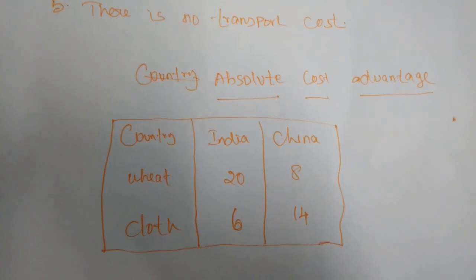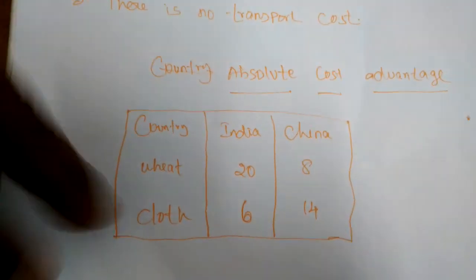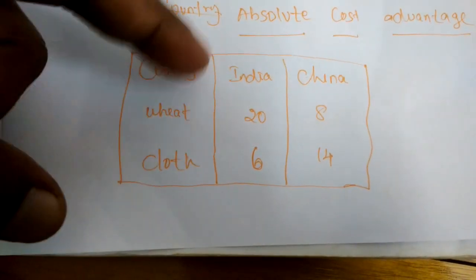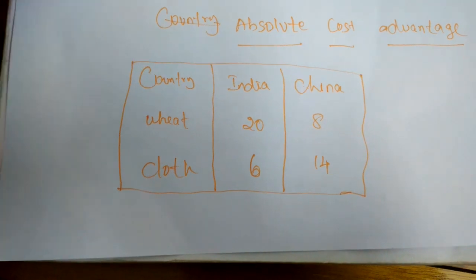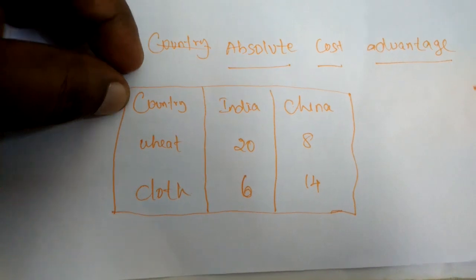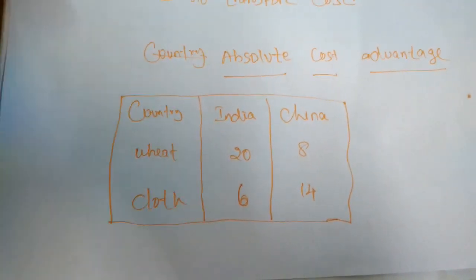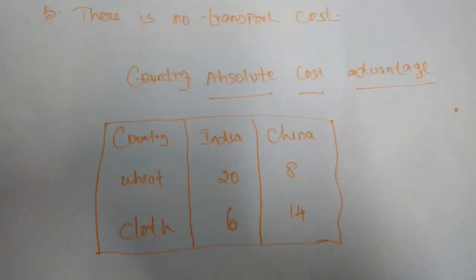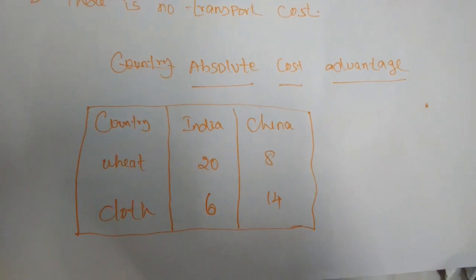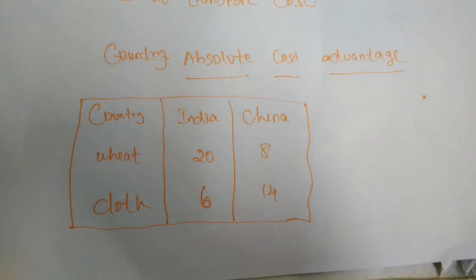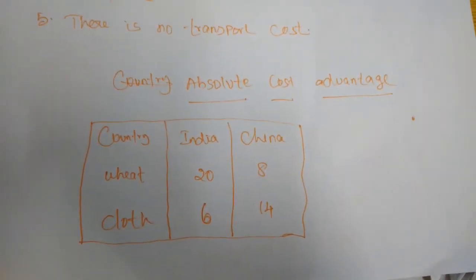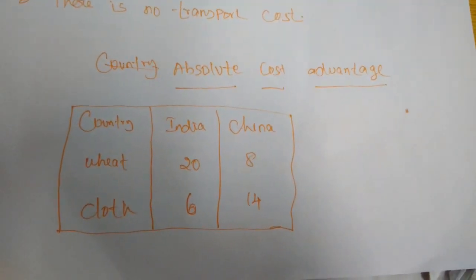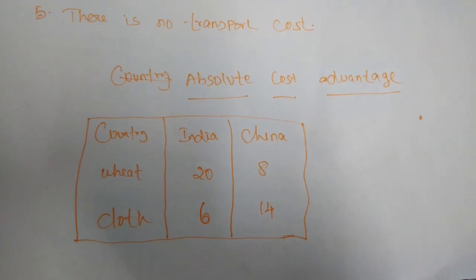We can explain absolute cost advantage by looking at this schedule. The schedule shows countries in one column and India and China in another. India produces wheat using 20 units of labor per unit of output. China produces wheat using 8 units of labor per unit of output. India produces cloth at 6 units of output per one labor. China produces 14 units of cloth per unit of output.